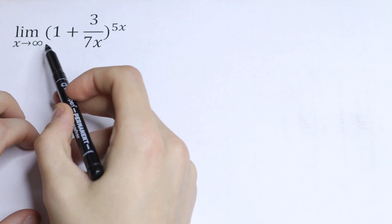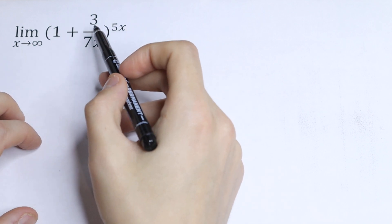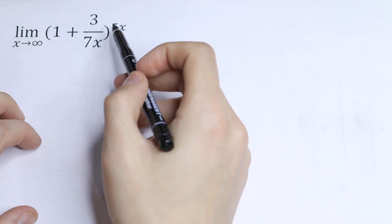What is the limit as x approaches to infinity of the function 1 plus 3 over 7x all raised to the power of 5x?